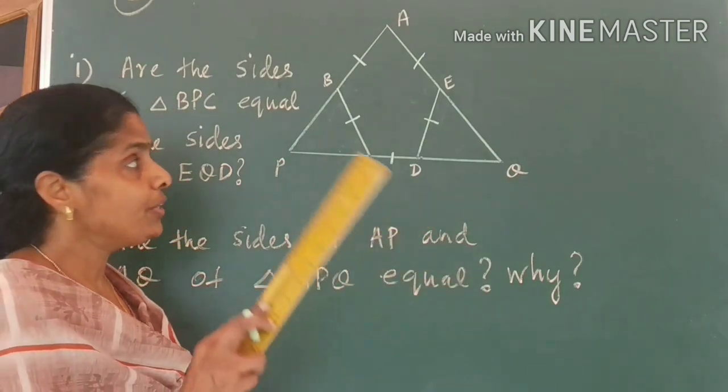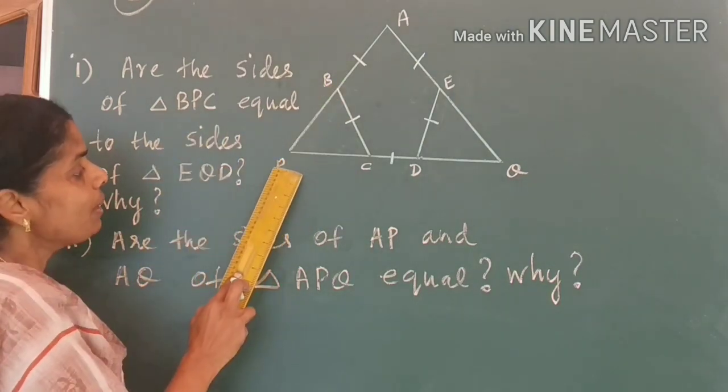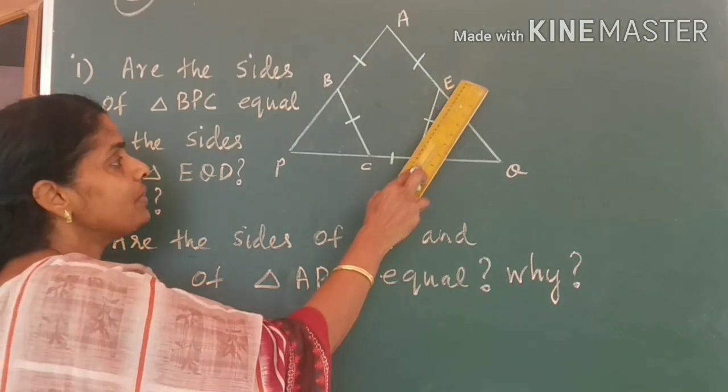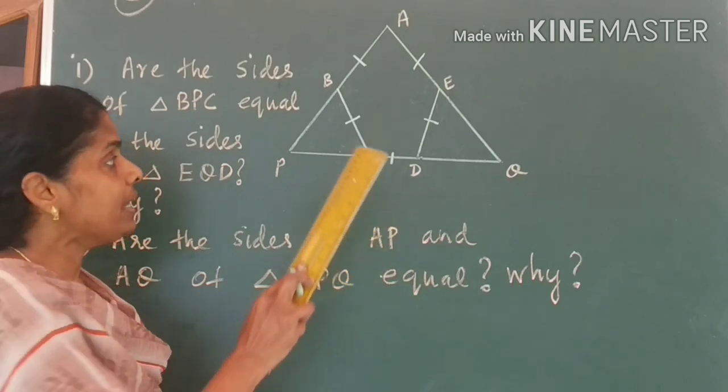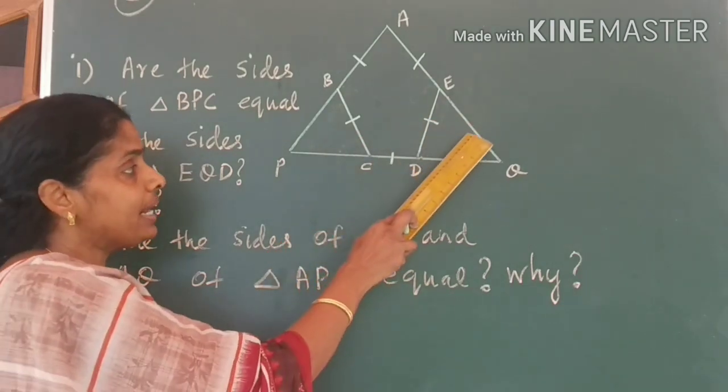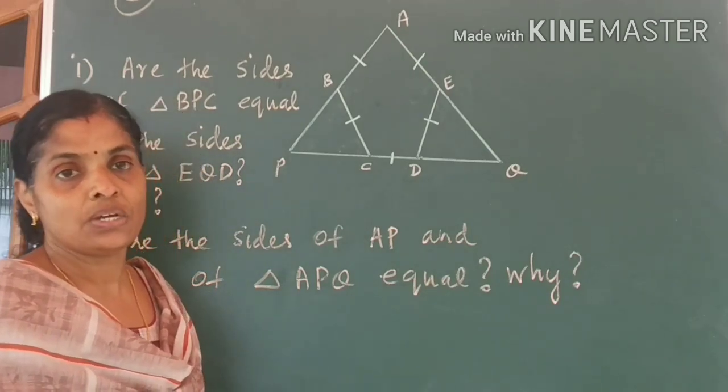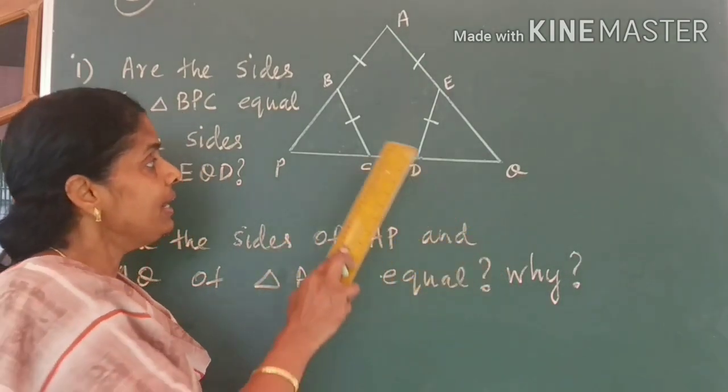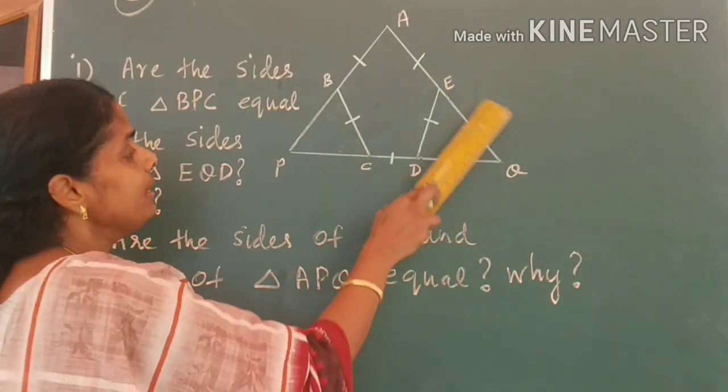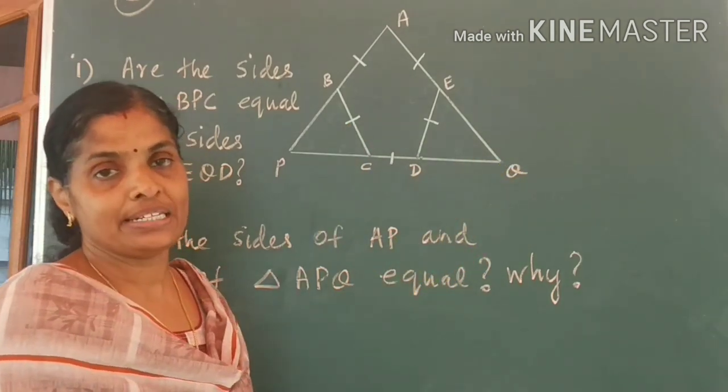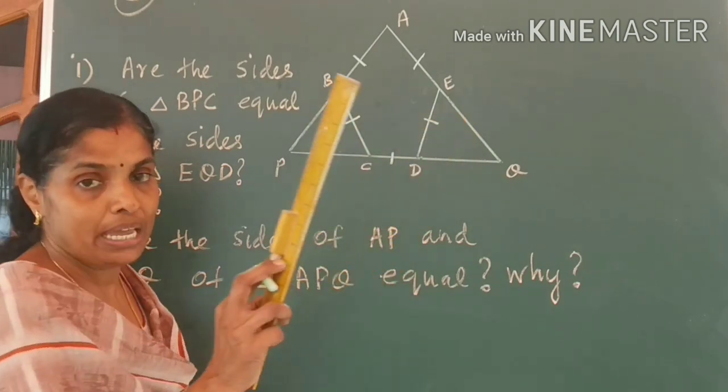Now, our question is to find out whether the sides of triangle BPC and the sides of triangle EQD equal? Why? When are the sides of the two triangles equal if the triangles are equal triangles? So, it is enough if you prove triangle BPC and triangle EDQ are equal triangles. I will show you how to prove these two triangles to be equal.